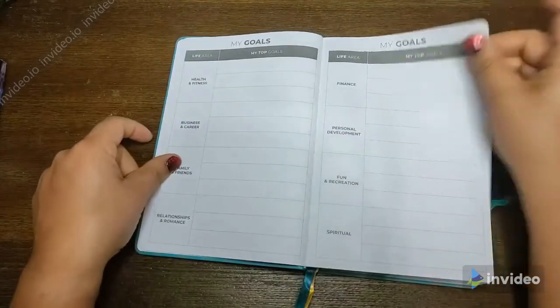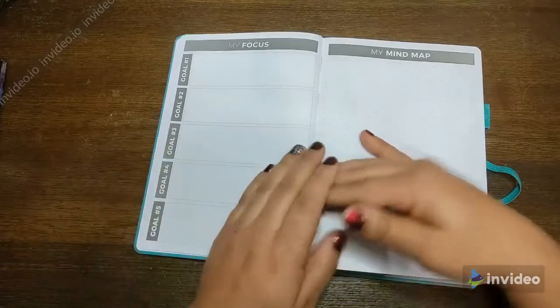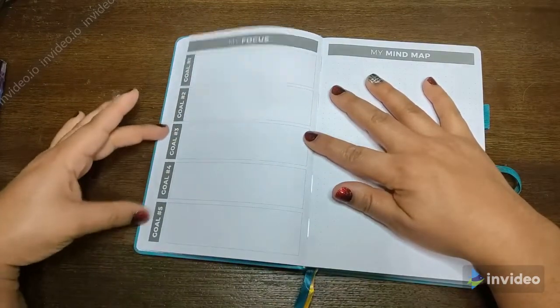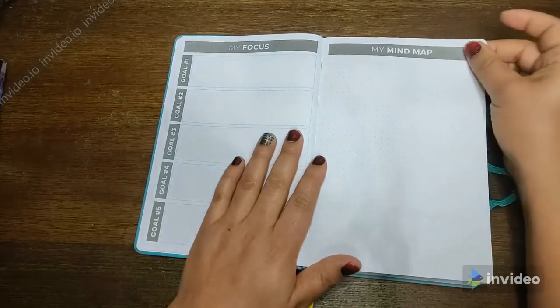Here's the place for your vision board, goal setting, your focus areas, so I'm assuming these are your main goals and where your areas of focus are, and a mind map space with a dot grid.